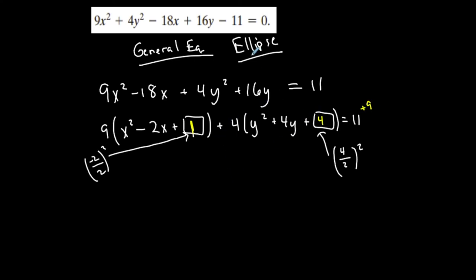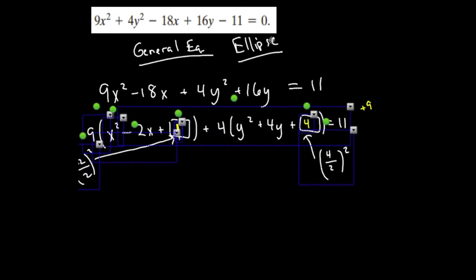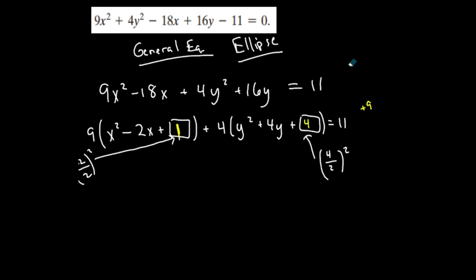Did I really add a 4? No, because the 4 is inside parentheses with a 4 in front of it. If I distribute this back through, I really added a 16, so I have to add a 16 to the right hand side.